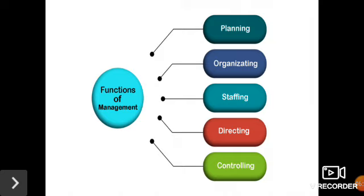The second function is organizing. Organizing establishes harmonious relationships among all workers of an organization by providing them with suitable authority and responsibility. The organization process involves the identification and analysis of activities required for the attainment of organizational objectives and the assignment of duties to individuals.